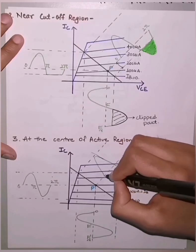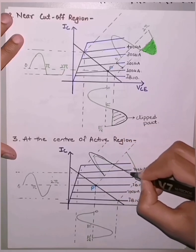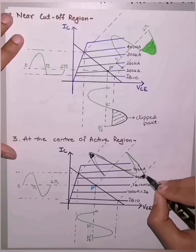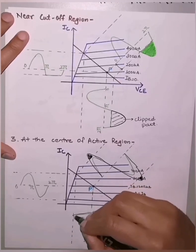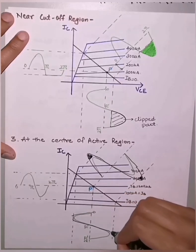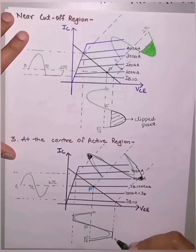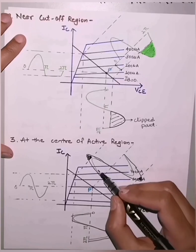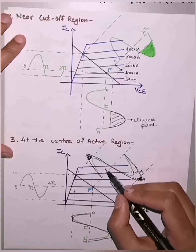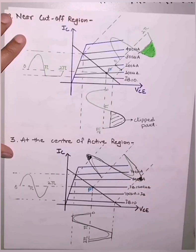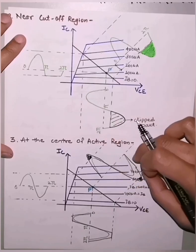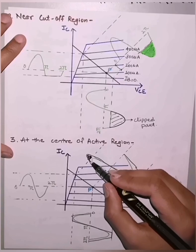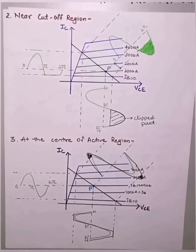Even with the Q point centered, if a signal higher than the available swing amplitude is applied, the parts above and below the active region will be clipped at the output, producing a distorted waveform. Therefore, it is very important to choose the Q point at the center of the active region to allow maximum signal amplitude. However, there is still a limit — applying a very high amplitude signal will clip both the upper and lower parts. This is the importance of the Q point.